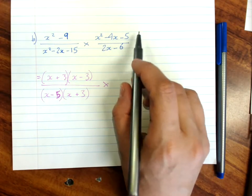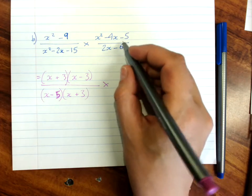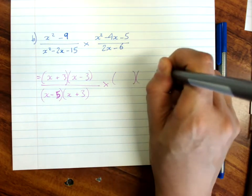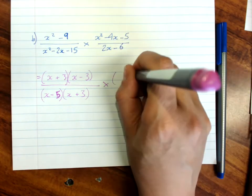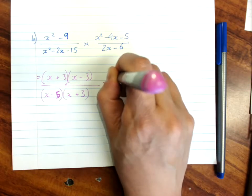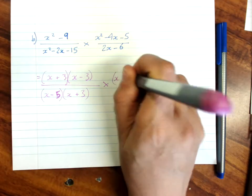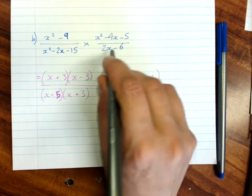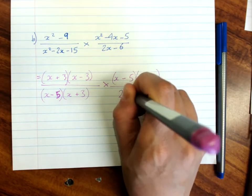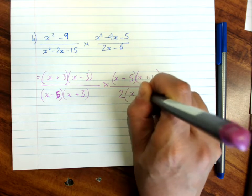Times 5. That's nice. We've only got one option. It's 5 and 1. The middle number is negative so the larger one must be negative. And this is just a simple factorization of 2 outside of x minus 3.